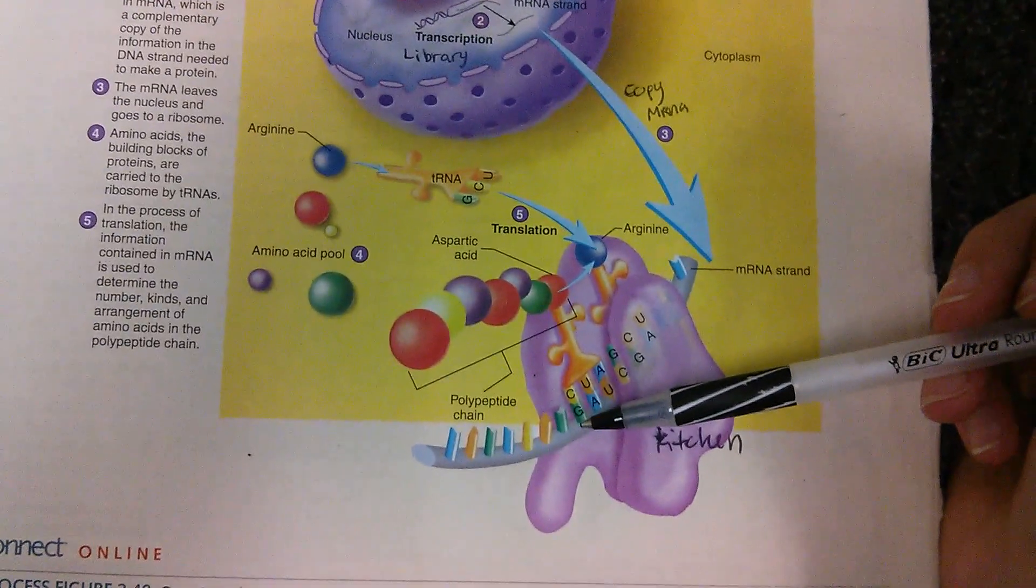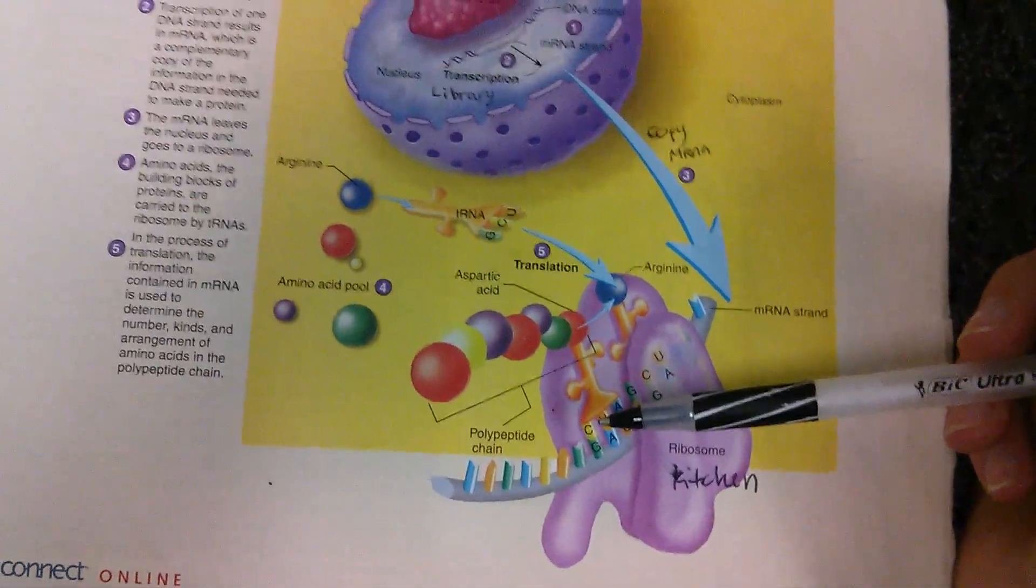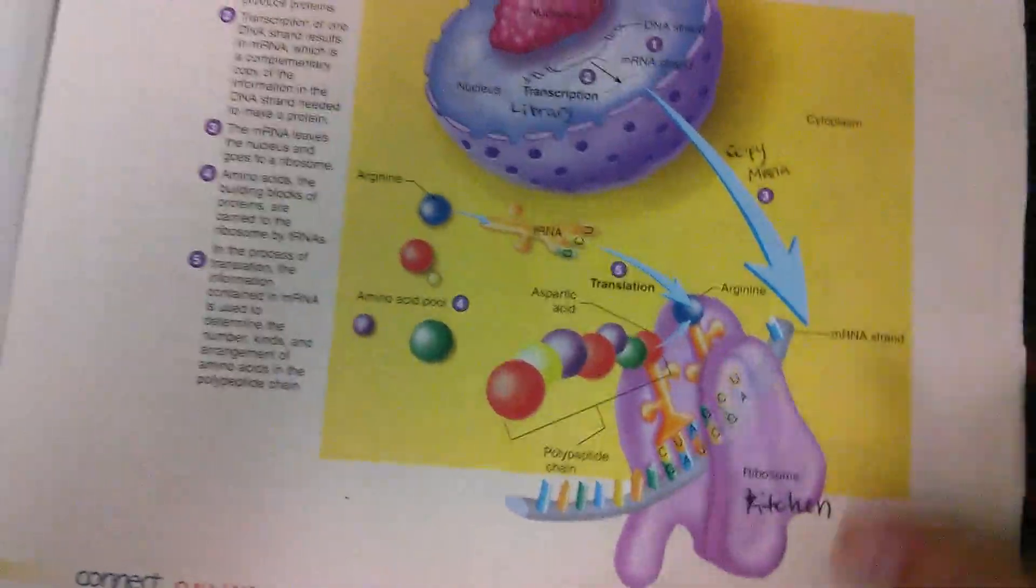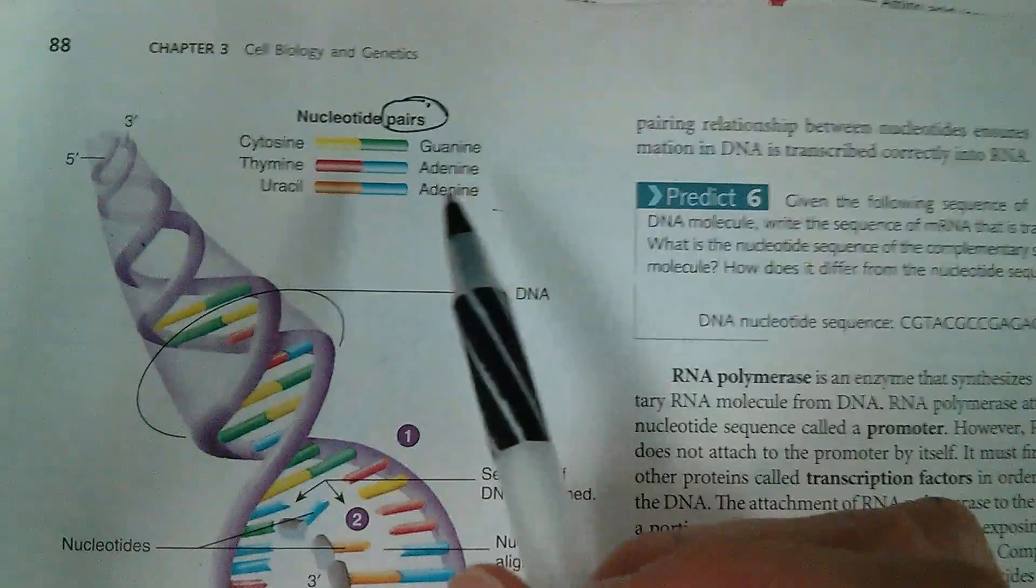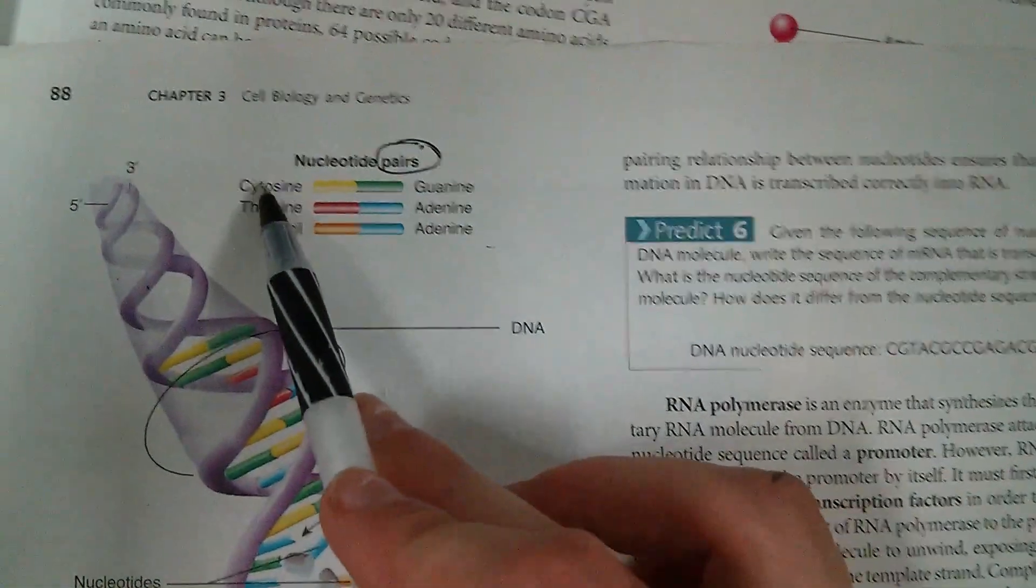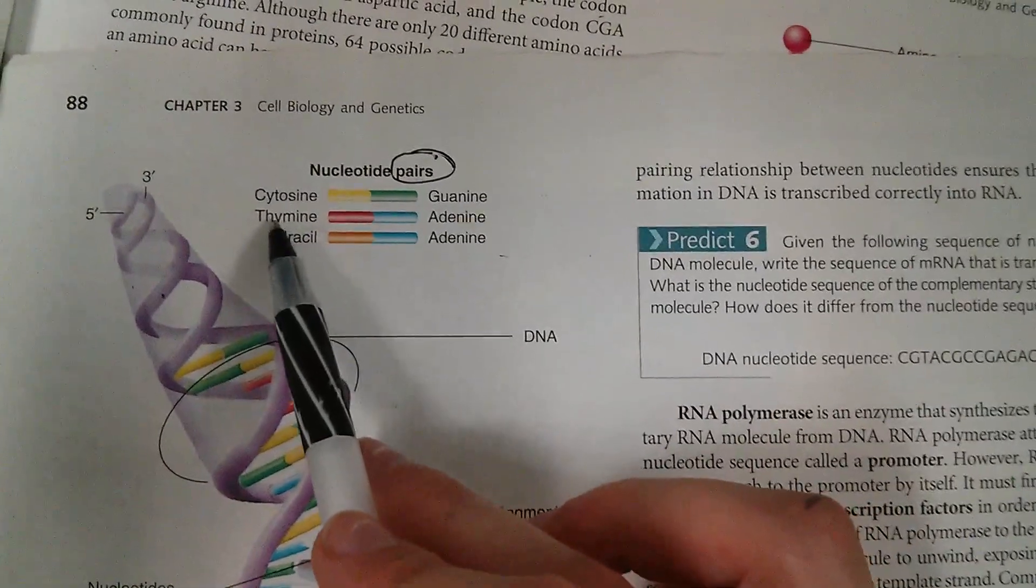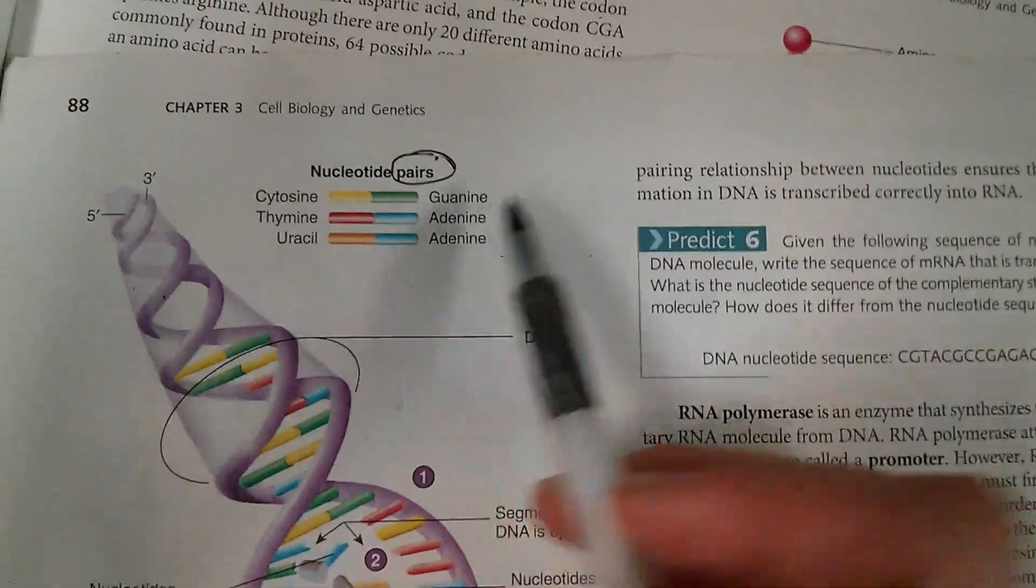So if he sees a guanine, he knows that he needs to bring the corresponding ingredients. And so on this page, it tells you how it knows. So if it has a cytosine in the recipe, he knows he has to go get a guanine. If there's a thymine in the recipe, he knows he has to go get an adenine, and so forth.